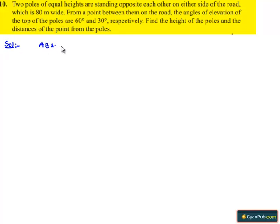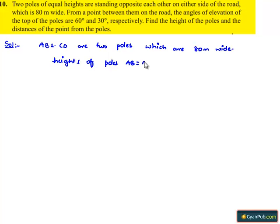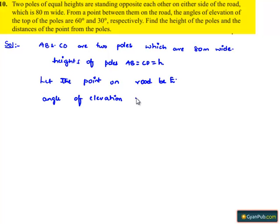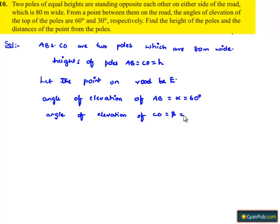Let us assume AB and CD are two poles which are 80 meters apart. The heights of the poles are equal, so let us equate them to some height H. Let the point on the road be E. The angle of elevation of pole AB be alpha, equal to 60 degrees, and the angle of elevation of pole CD be beta, which is 30 degrees.